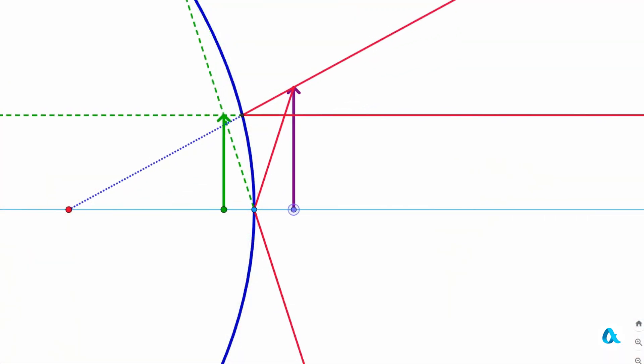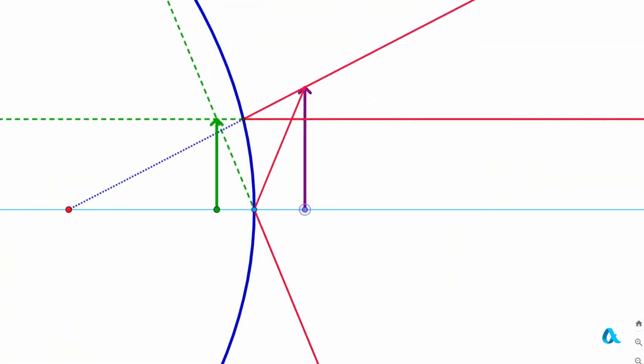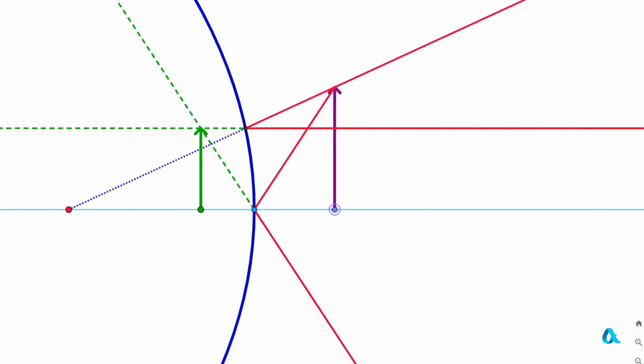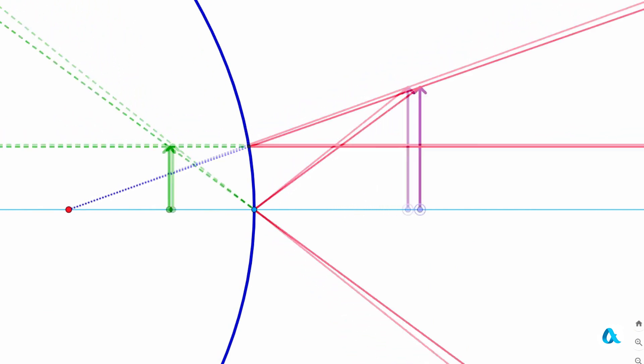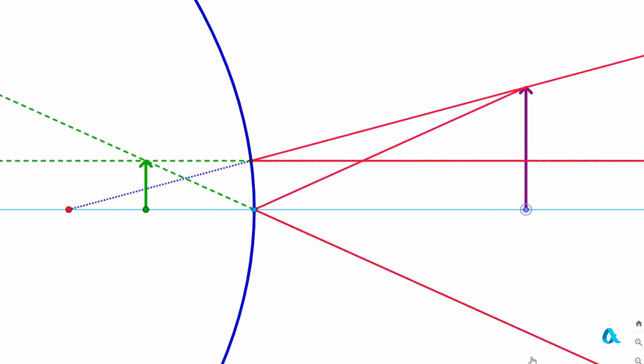Let's observe this change in the image in the GeoGebra program. As the object moves farther away from the convex mirror, its image approaches the focus and becomes progressively smaller and smaller.